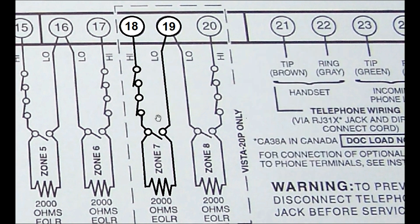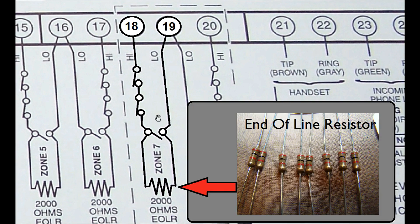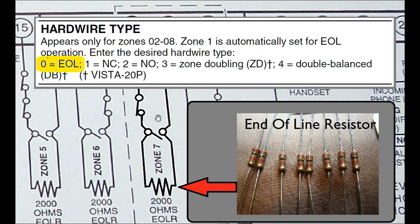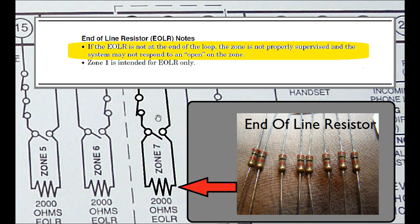Finally, we get down to these, the end of line resistors. When you bought your Vista 20P panel, you should have found eight of these resistors inside. When you're programming each zone's hardware type, the preferred type is zero or end of line. Now looking through the installation manual, you'll also find this note involving end of line resistors.